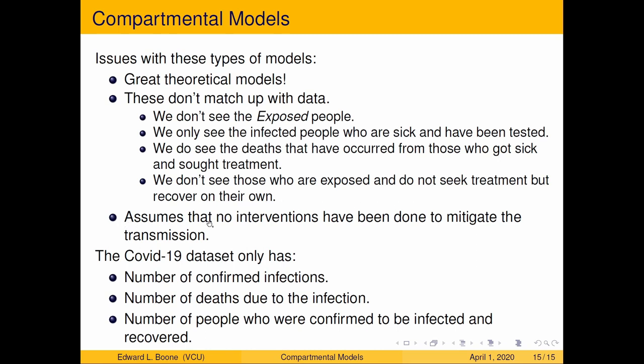This also assumes that no interventions have been done to mitigate the transmission. So when we go to the COVID-19 data set, which is in the repository that you'll see in a couple more videos when we actually do this in R, we have the number of confirmed infections, the number of deaths due to the infection, and the number of people who were confirmed to be infected and then recovered. We only have a couple of these states. That's why we're going to have to modify our model, but we'll do that in the next video. So see you there.